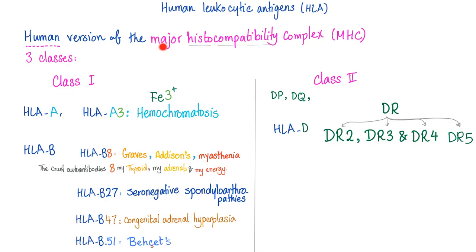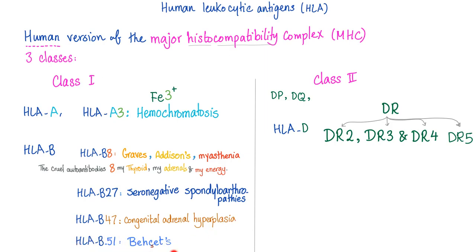For HLA class 1: HLA-A3 is associated with hemochromatosis. HLA-B27 is associated with seronegative spondyloarthropathies. HLA-B8 is associated with Graves' disease, Addison's disease, and myasthenia gravis — mnemonic: my thyroid, my adrenals, and my energy. HLA-B47 is associated with congenital adrenal hyperplasia. HLA-B51 is associated with Behçet syndrome.